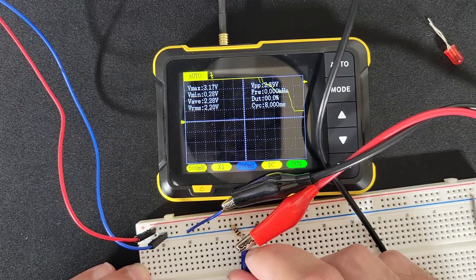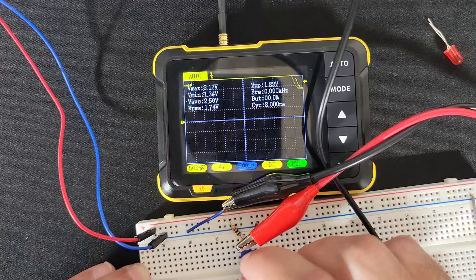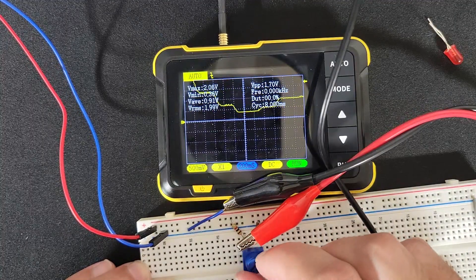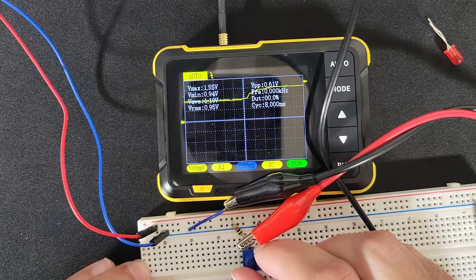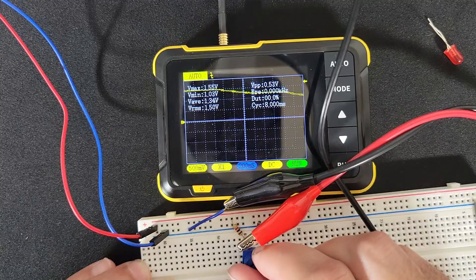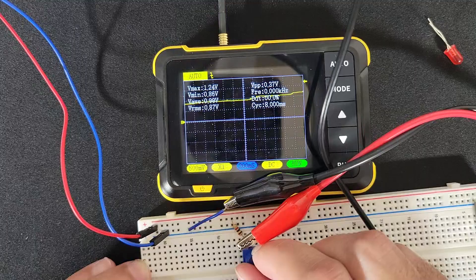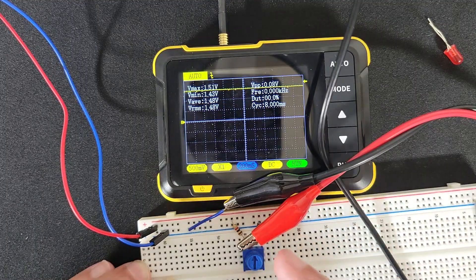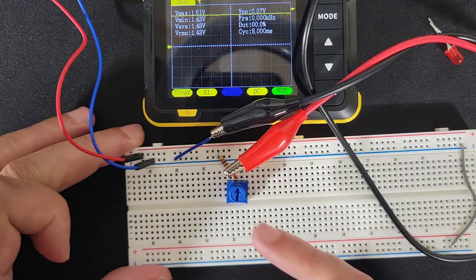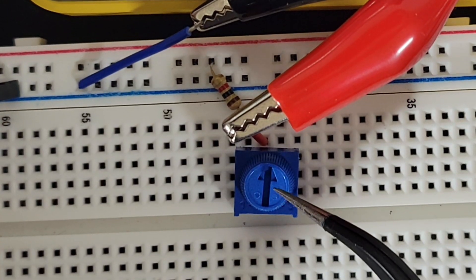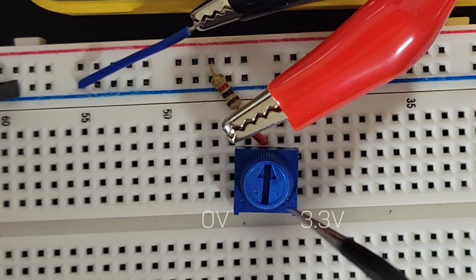So here we are at zero pretty much, and then we can go up all the way to three volts. So we're not limited now by the LED. Here we can see we can adjust the voltage of what we want it to be. So for example, if we have a three volt circuit, which is what I have now, and we only want 1.5, then we could tune this upwards. And we can see that right now, if I can be a little bit more precise, right now we have 1.51 volts coming out of the middle wiper of the potentiometer.